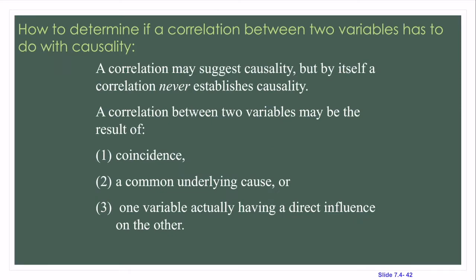So how do we determine if a correlation between two variables has to do with causality? A correlation may suggest causality, but by itself it never, ever establishes causality. A correlation between two variables — friendly reminder — can be the result of a coincidence, a common underlying cause, or one variable actually having a direct influence on the other.